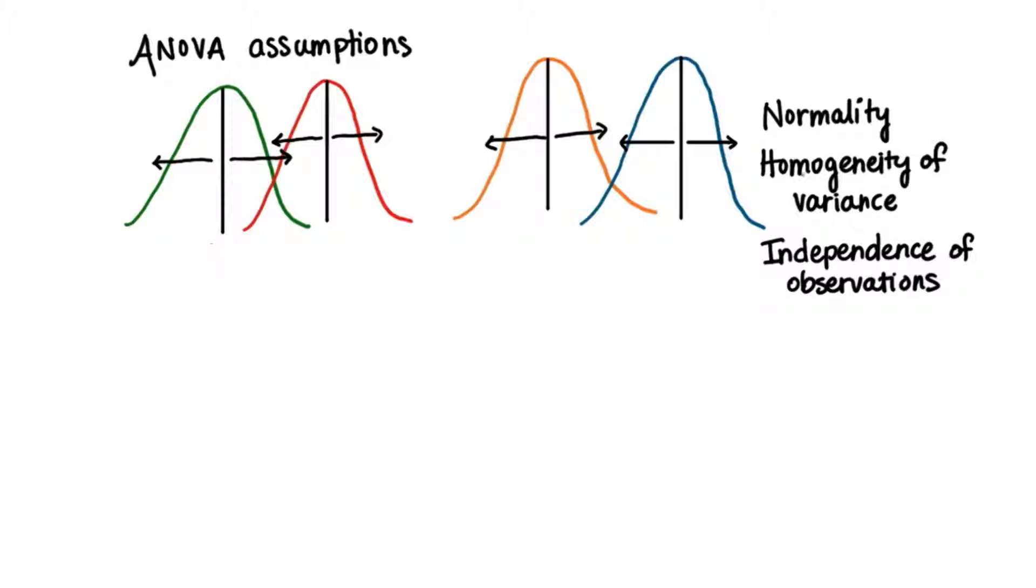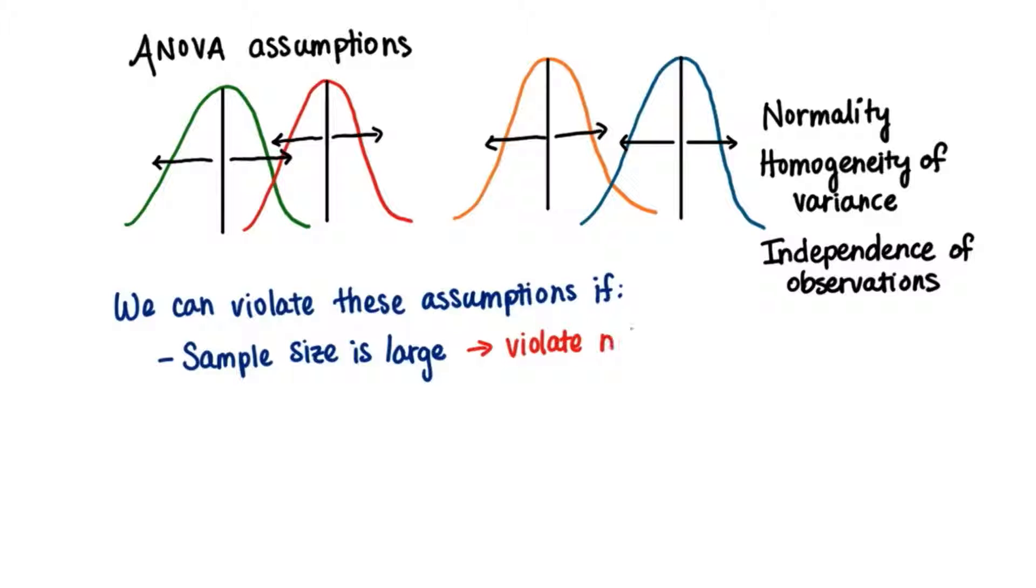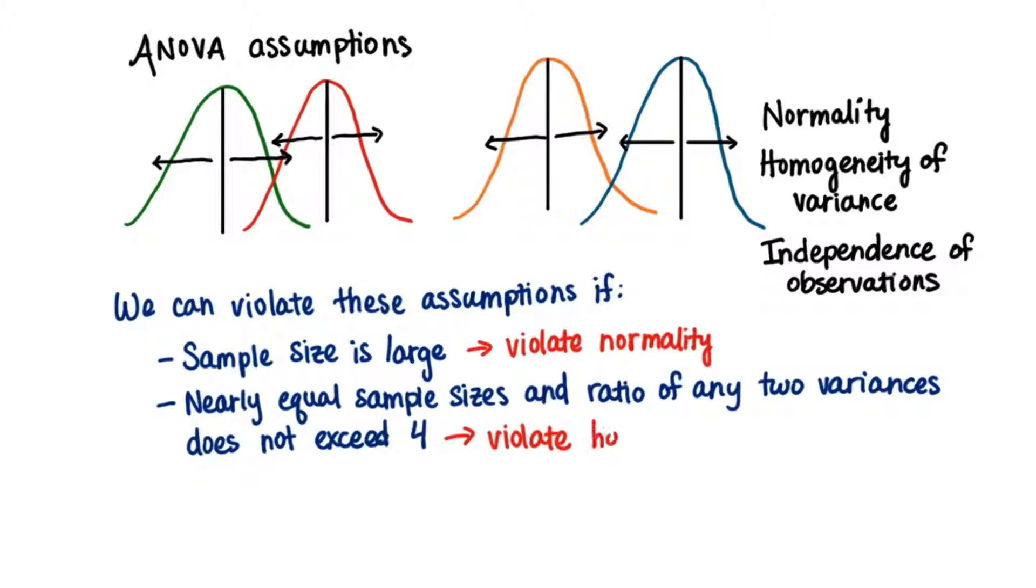However, we can violate these assumptions under certain conditions. We can violate the normality assumption if the sample size is large. We can violate the homogeneity of variance assumption if all the samples have nearly equal sample sizes and the ratio of any two variances does not exceed 4. We have to maintain independence of observations, but we can use random assignment to conditions to help us meet this assumption.